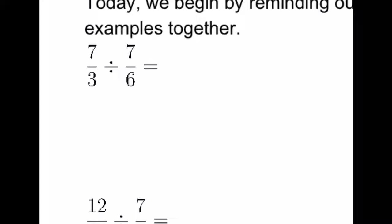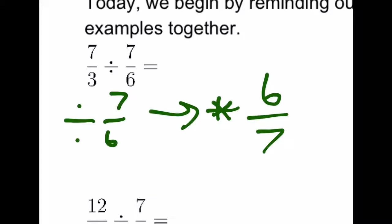If we want to take 7 thirds divided by 7 sixths, how can we solve that? We're going to use a strategy in math where dividing by a fraction is the same thing as multiplying by its reciprocal.